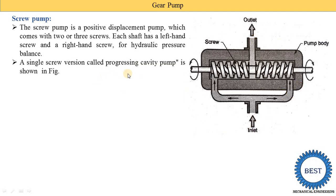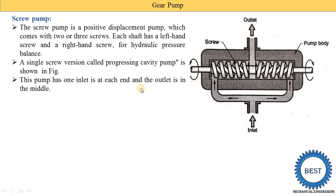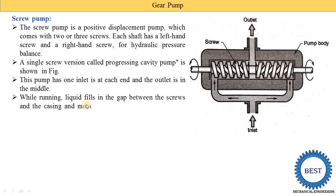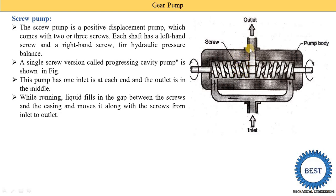The progressing cavity pump has an inlet at each end and the outlet in the middle. While running, liquid fills in the gap between the screw and the casing and moves along with the screw from inlet to outlet. Oil from both ends enters the space between the screw and casing, its pressure increases, and it is then supplied to the outlet.